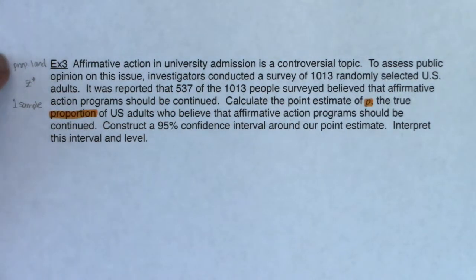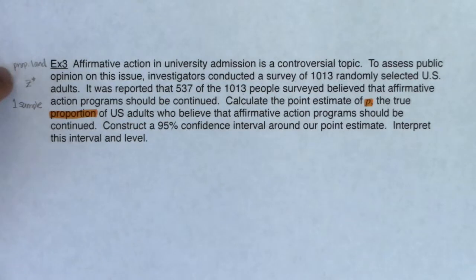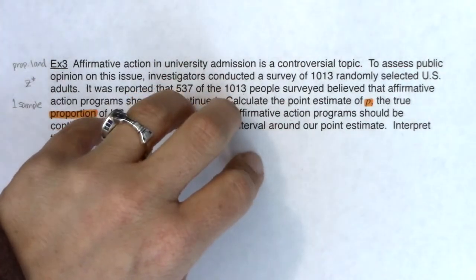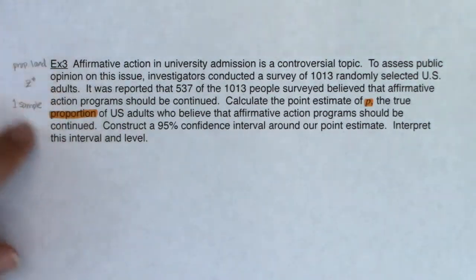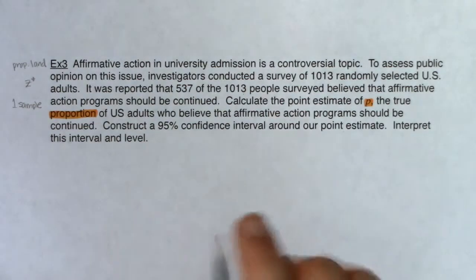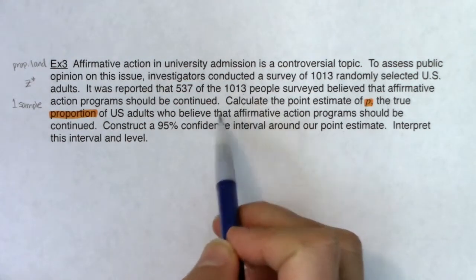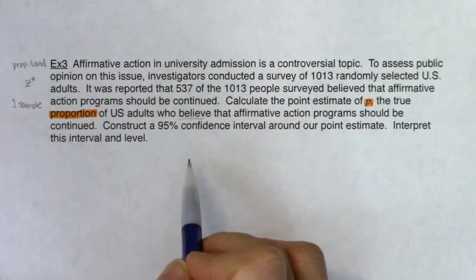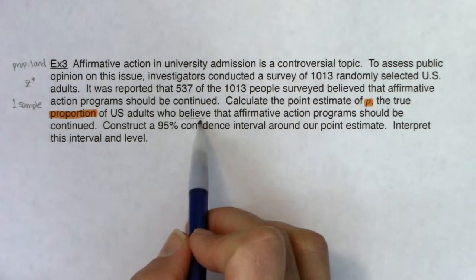In chapters 8 and 9 it'll always be proportion land (z*) or mean land (t*), and always one sample. Chapter 10 extends to two samples; chapters 11 and 13 go to three or more. The variable here — do you believe affirmative action should be continued, yes or no — is categorical, which confirms we're in proportion land.